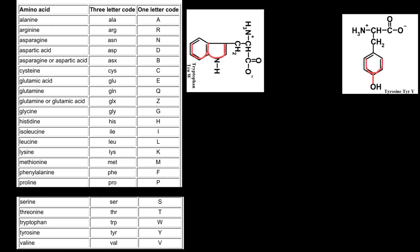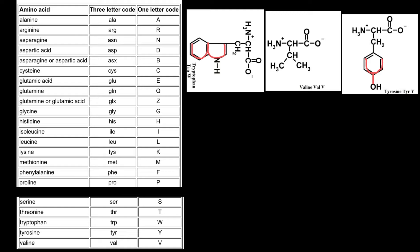What about valine? The first three letters come from the name: VAL. And how do we memorize V as the one-letter abbreviation? Again, valine is the only amino acid that starts with V. Another way to remember: if you look at the structure of valine, many people memorize that the one-letter abbreviation V fits into the structure upside down.